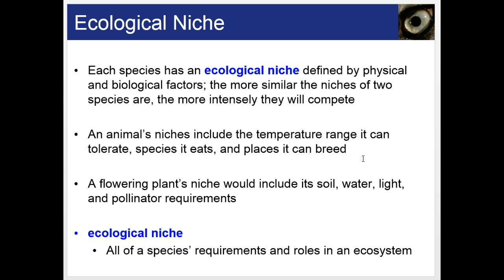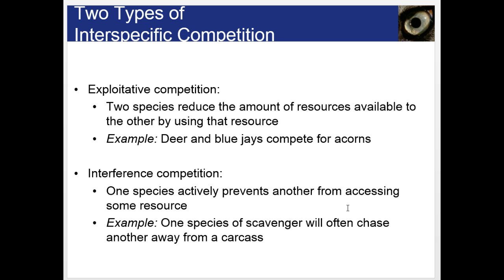An ecological niche is all of a species' requirements and roles in an ecosystem. You could say your niche is like your job and your habitat is like your address. There are two types of interspecific competition: exploitative competition, where two species reduce the amount of resources available to the other by using that resource, such as deer and blue jays competing for acorns; and interference competition, where one species actively prevents another from accessing the same resource, such as one species of scavenger chasing another away from a carcass.